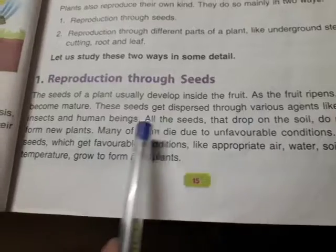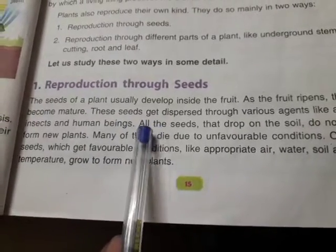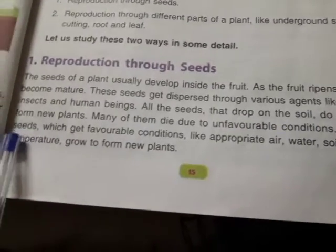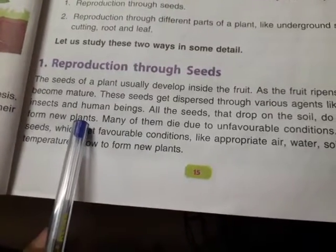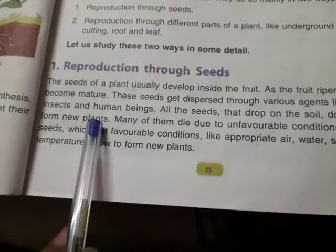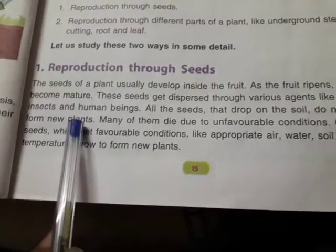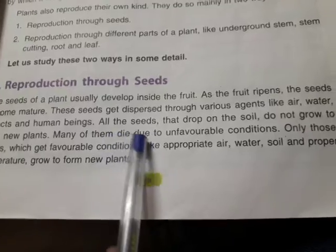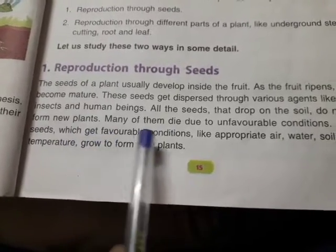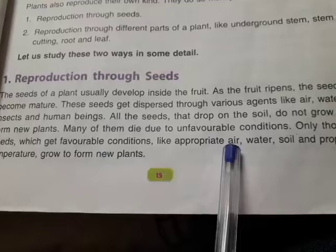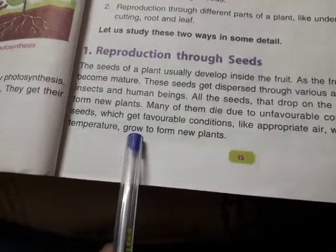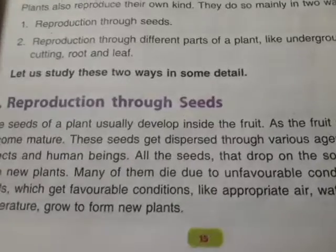Not all seeds that drop on the soil grow to form new plants. It is necessary to know that all seeds do not develop into new plants because all seeds cannot get suitable conditions to grow. Many of them die due to unfavorable conditions. Only those seeds which get favorable conditions like appropriate air, water, soil, and proper temperature grow to form new plants.